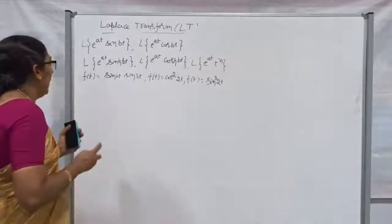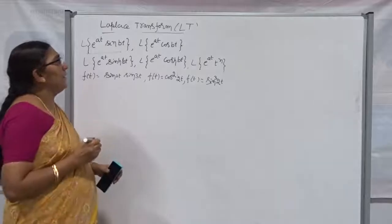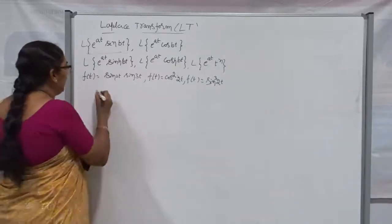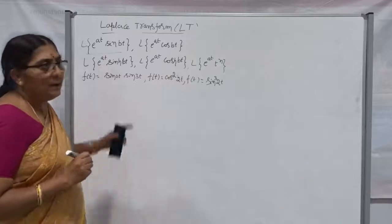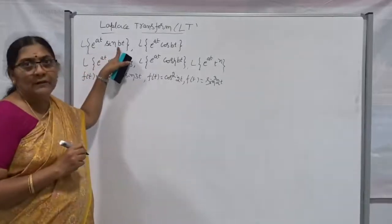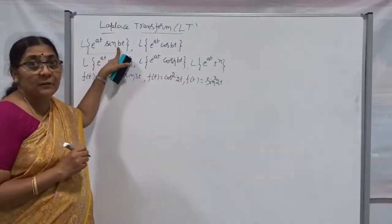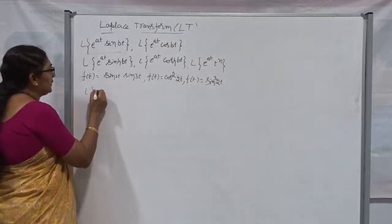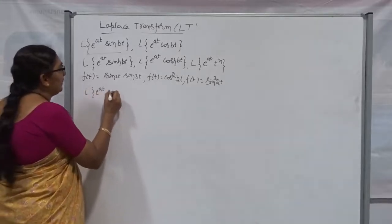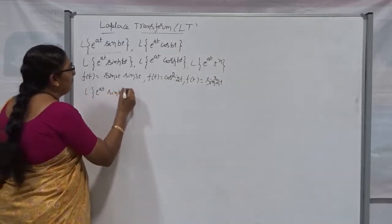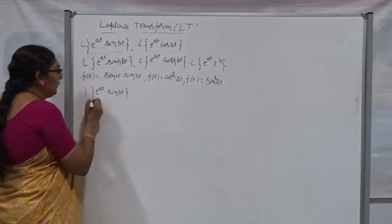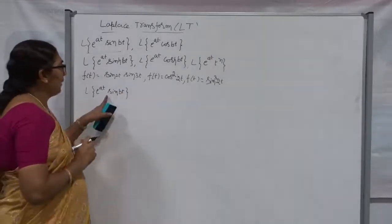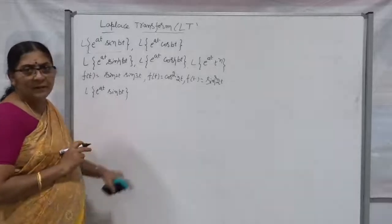Now I want to find out the Laplace Transform of e to the power At into sin Bt. Instead of following the direct definition of Laplace Transform, I am going to use one of the properties called the Shifting Property. The Shifting Property says that the Laplace Transform of e to the power At into f(t) is nothing but F(s) with s replaced by s minus A.